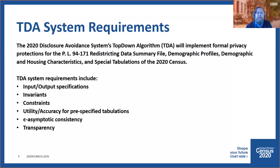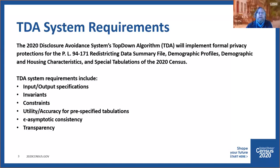Perhaps most importantly, the system must allow DCEP to determine the overall balance between privacy protections and the resulting data's fitness for use, along with the ability to prioritize accuracy across different tabulations at different levels of geography. The system must ensure that selecting the privacy loss budget directly controls data accuracy — that as you increase the privacy loss budget to infinity, the algorithm will eventually output the original CEF microdata. And lastly, transparency: all design code and parameters of the Disclosure Avoidance System must be able to be made public.